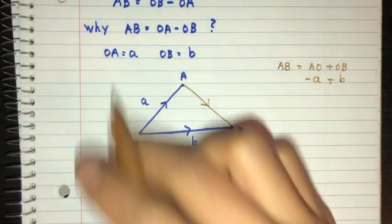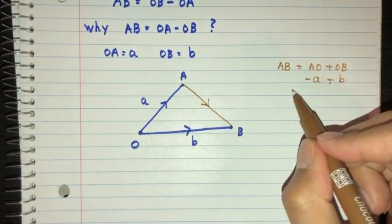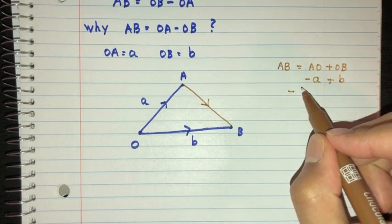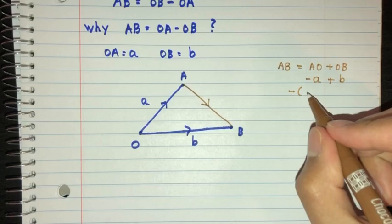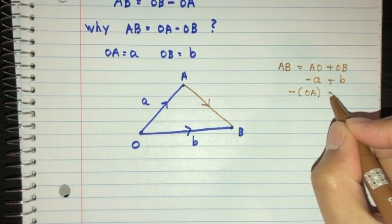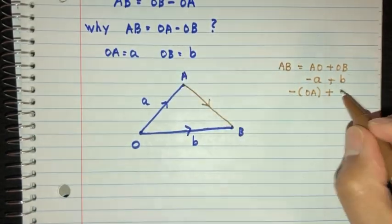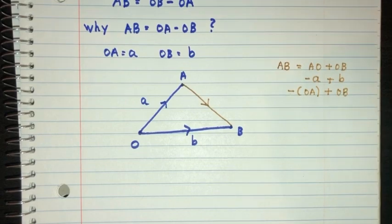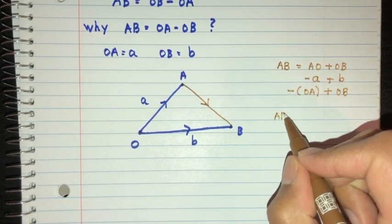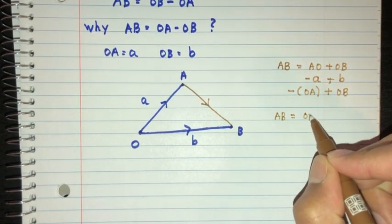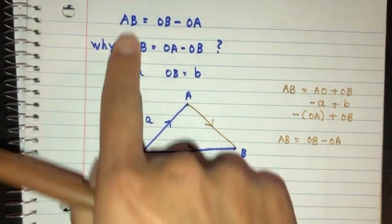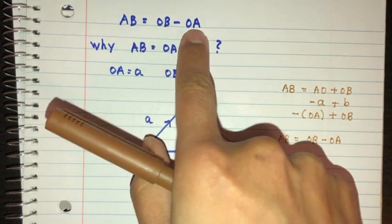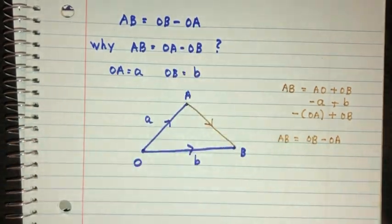But now if you observe, we can take out the minus, and what is the value of A? A is given by OA, and what is the value of B? It is OB. So if you want to write this down again, AB is equal to OB minus OA. So that's why you get AB is OB minus OA, and not OA minus OB.